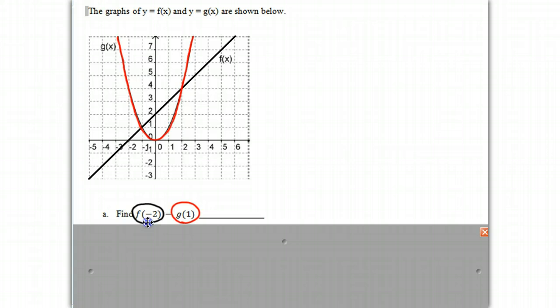When you find f of negative 2, we simply find the value where x is equal to negative 2 of the function and evaluate the y value. Looking at the black function f of x, where it's equal to negative 2 is right there. I'll draw a little point there. That's f of negative 2, and notice that the y value is 0. So f of negative 2 equals 0.